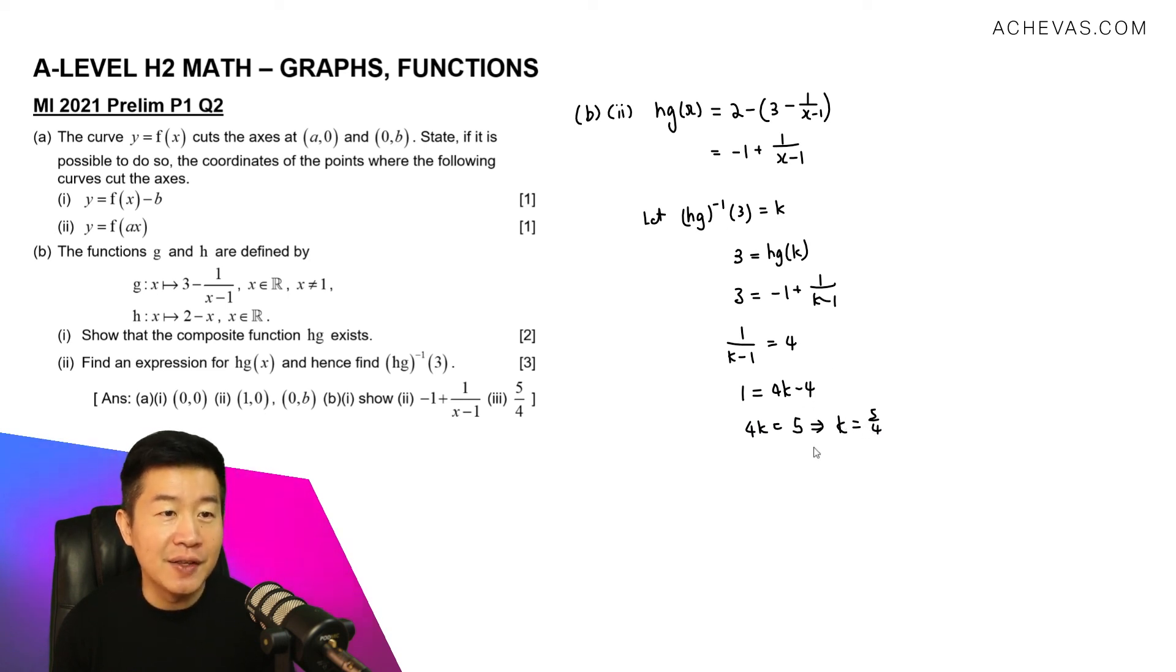Hey, what is k? k is actually this. So therefore, we can then conclude that hg inverse of k is equal to this. hg inverse of 3 is going to be equal to, now we have solved it, 5 over 4.